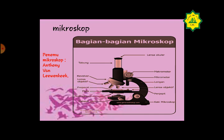Mikroskop ditemukan oleh seorang ilmuwan Belanda, yaitu Anthony van Leeuwenhoek, pada tahun 1723. Mikroskop sederhana kemudian berkembang menjadi mikroskop cahaya dan mikroskop elektron. Dengan mikroskop elektron, kemampuan pengamatan terhadap suatu objek mikroskopis menjadi lebih detail. Silahkan perhatikan bagian-bagian mikroskop berikut.